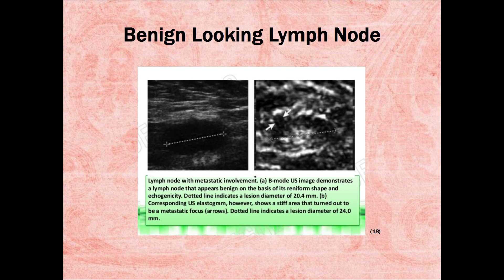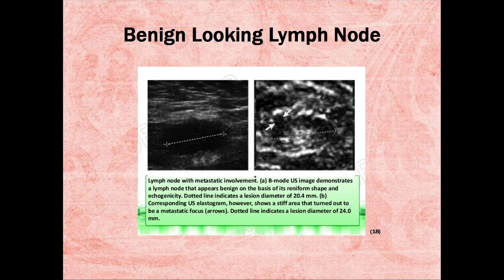Note the intranodal cystic necrosis, which appears as an echolucent area within the lymph node shown in arrows. Don't take for granted that if it looks benign, it is, because sometimes that is not the case. Here is a case of a lymph node with metastatic involvement. B-mode ultrasound image demonstrates a lymph node that appears benign on the basis of its reniform shape and echogenicity, with a lesion diameter of 20.4 millimeters. However, the corresponding ultrasound elastogram shows a stiff area that turned out to be a metastatic focus, with a lesion diameter of 24 millimeters.